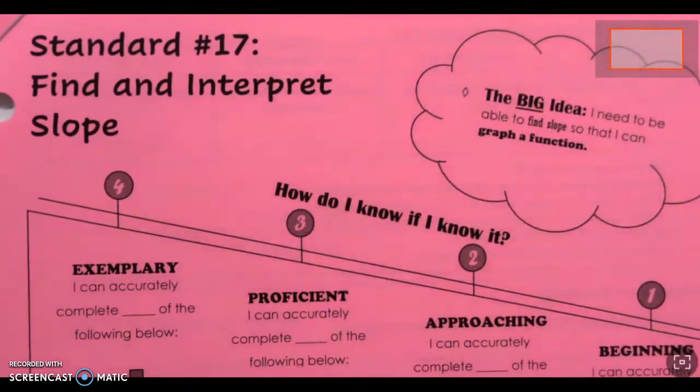There are four different things that we want to be able to do. We want to calculate slope from a graph, calculate slope from two points, calculate slope and determine if it's a zero or undefined type slope, and calculate a slope from a story problem.